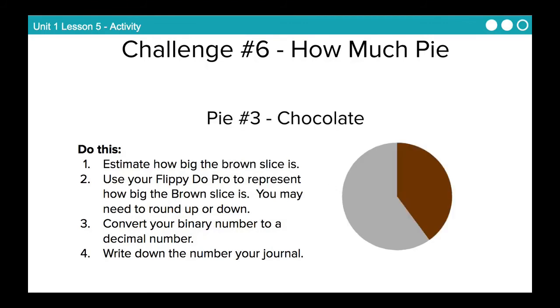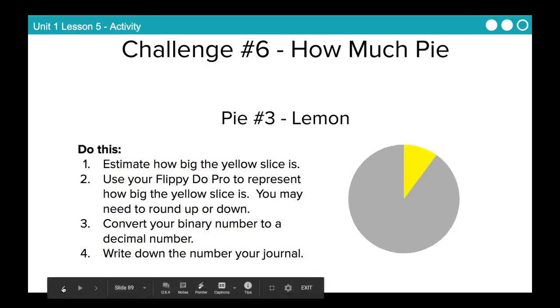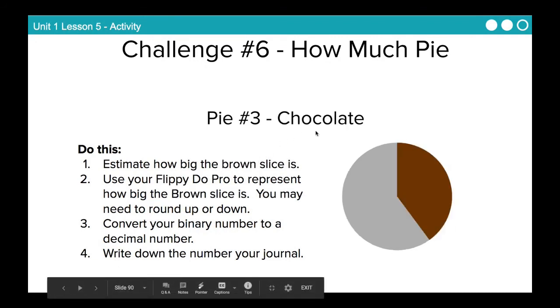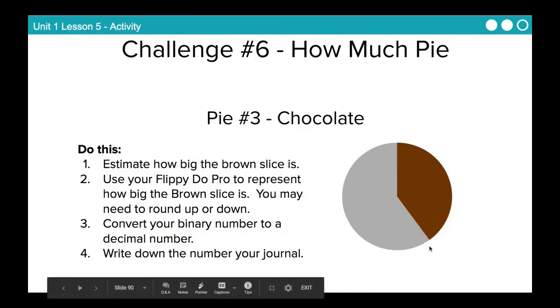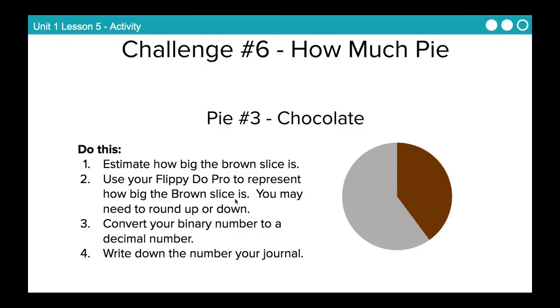And then pie number 4 is chocolate. Look at this here. Estimate what you think that is. Convert it from binary to decimal. And write down that number in your journal. I went through that pretty quickly. Just pause the video and answer the questions before moving on.